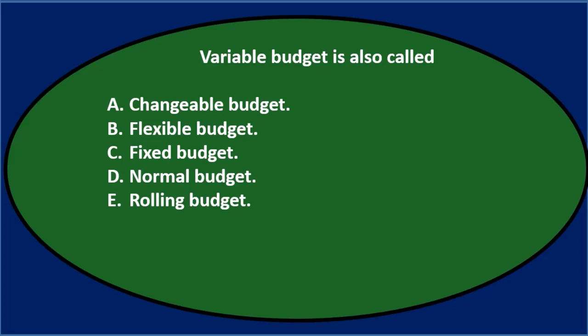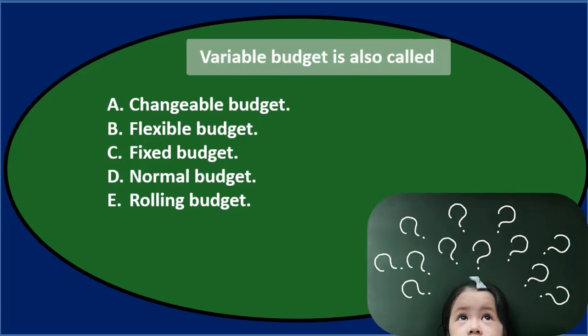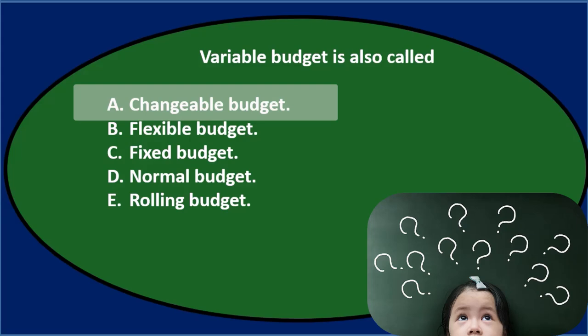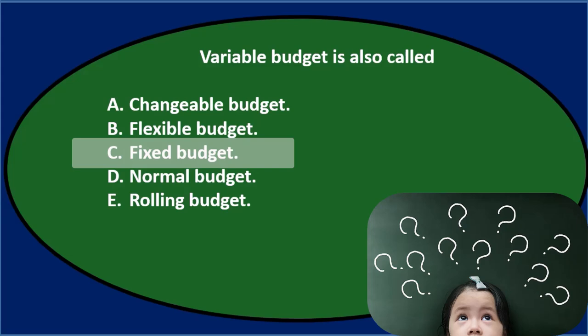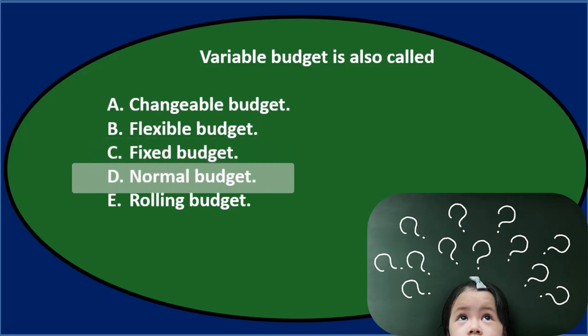First question: Variable budget is also called — A. Changeable budget. B. Flexible budget. C. Fixed budget. D. Normal budget. E. Rolling budget.